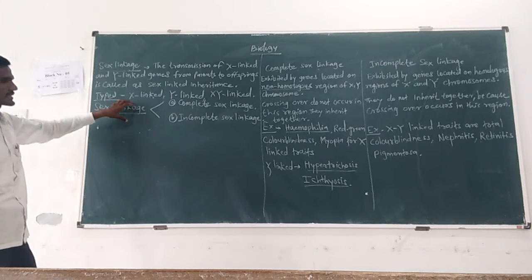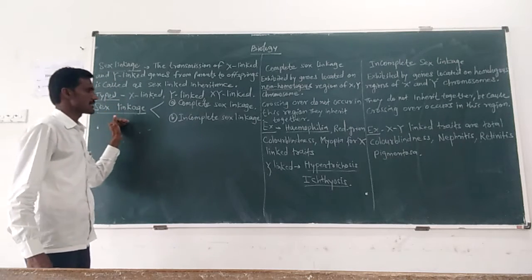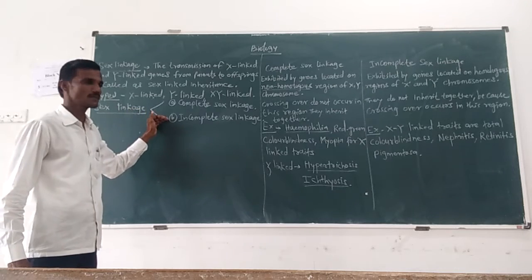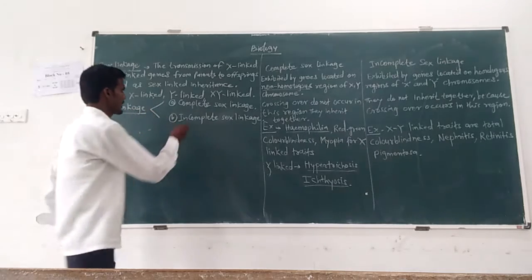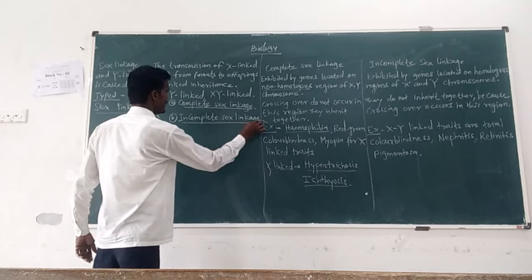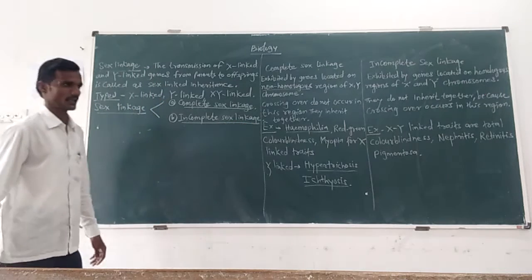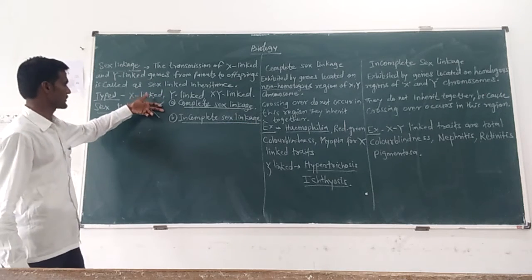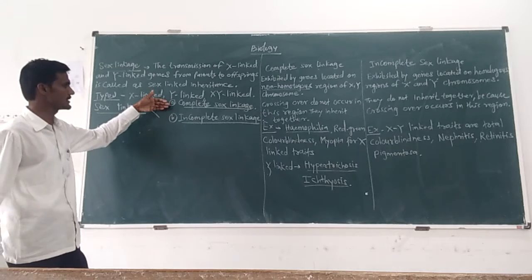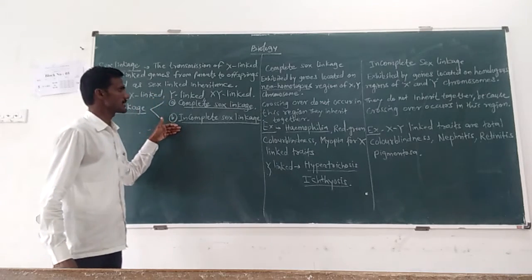Second, types of sex linkage. Sex linkage is classified into two types: complete sex linkage and incomplete sex linkage.